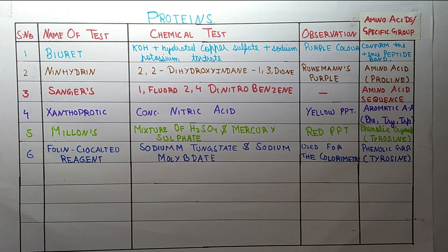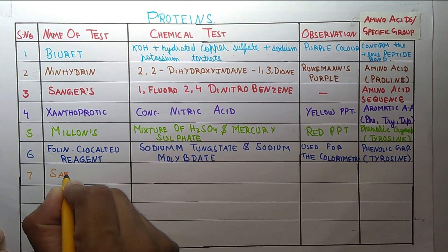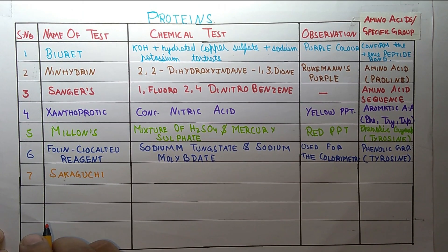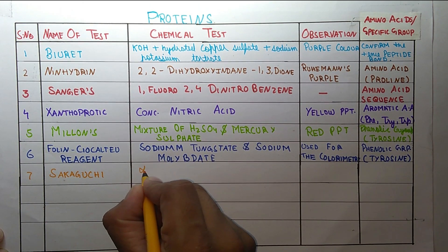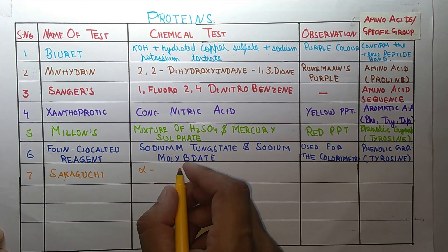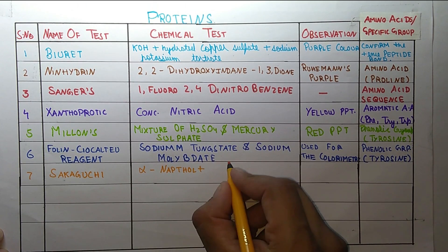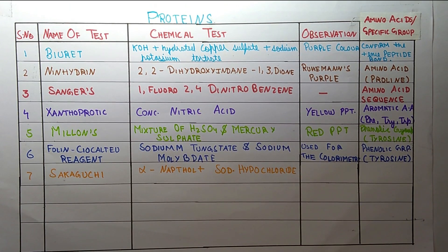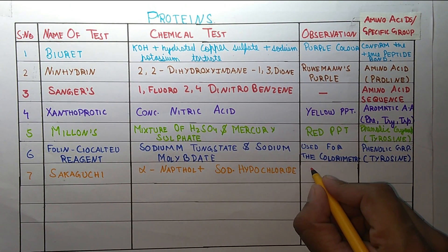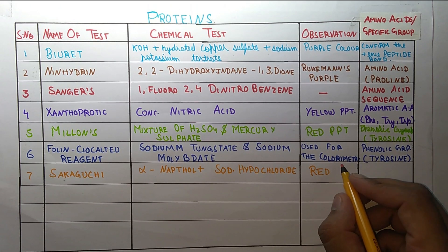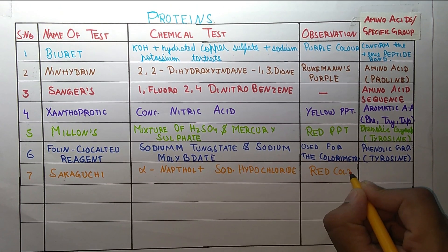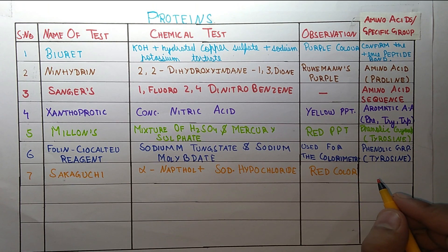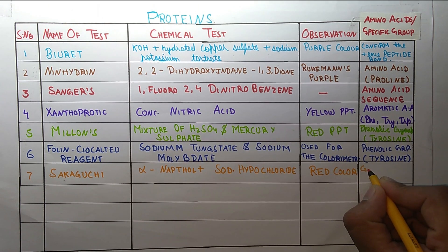The next test is the Sakaguchi test. In the Sakaguchi test we use alpha-naphthol plus sodium hypochlorite. The color observed is red. It confirms the guanidine group, which is present in the amino acid arginine.